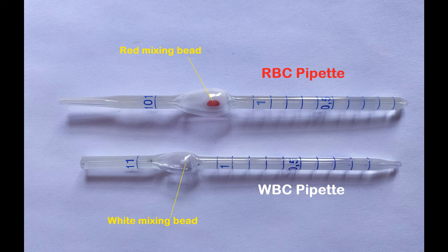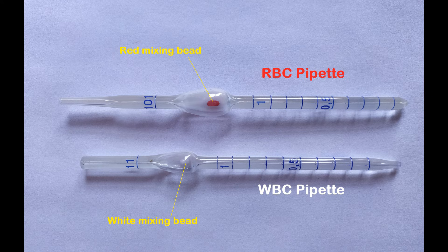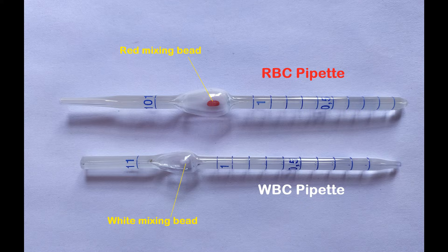The WBC pipette has a white bead inside of the bulb and has three graduations. This is used to count WBCs in blood samples.